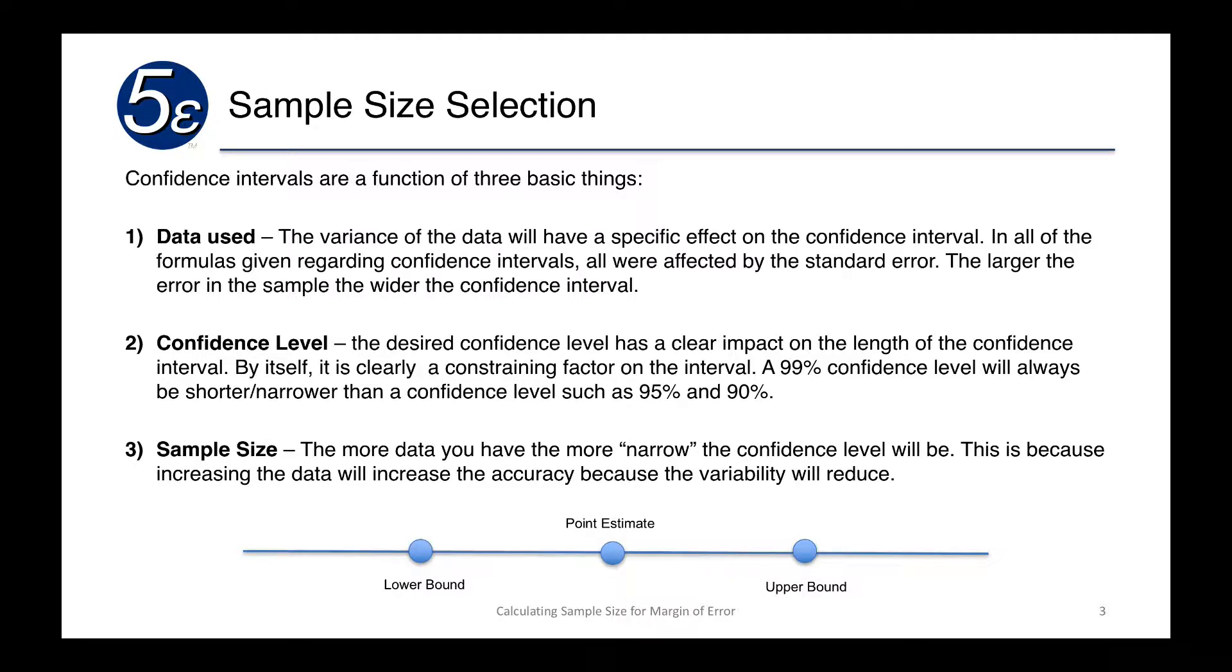The confidence level has a clear impact on the length because it's a constraining factor on the interval. A 99% confidence level will always be shorter than a 95% or 90% confidence level.